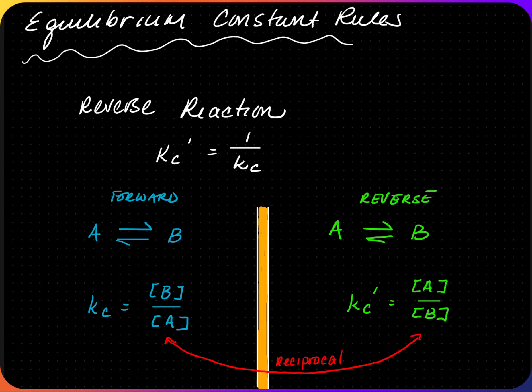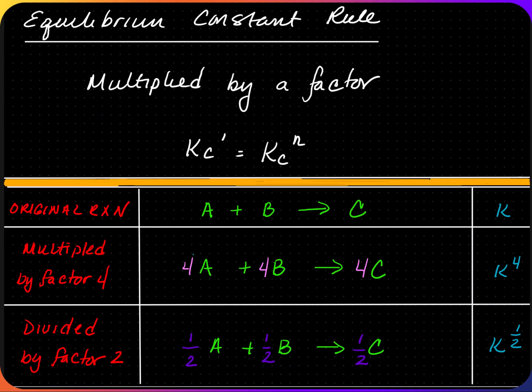Equilibrium constants can be manipulated. For a forward reaction A → B, Kc = [B]/[A]. For the reverse reaction B → A, the new Kc prime equals [A]/[B], which is the reciprocal of the forward reaction. Therefore, the Kc for the reverse direction equals 1/Kc of the forward direction.